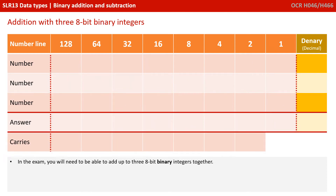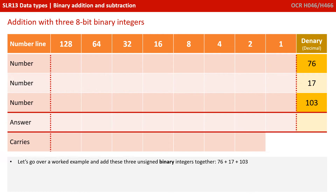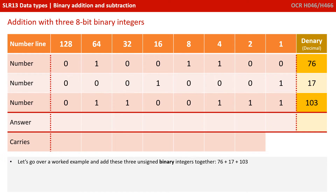As mentioned at the start, you can be expected to add up to three 8-bit binary integers together. The process is exactly the same — you just have a third binary number to add. So let's add the decimal values 76, 17, and 103 together. The first job is to write out each of those decimal values in their 8-bit binary form, nice and neatly underneath each other in columns.